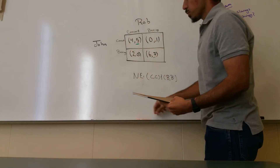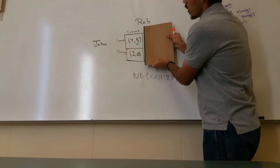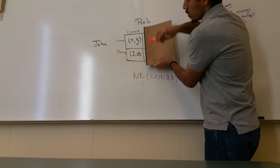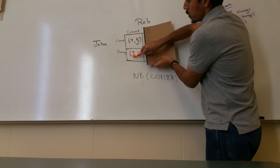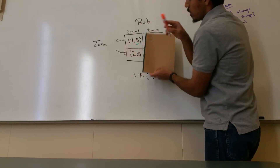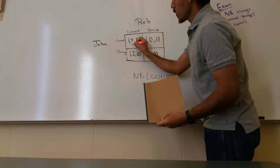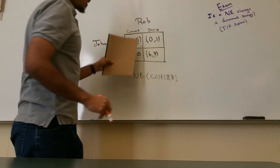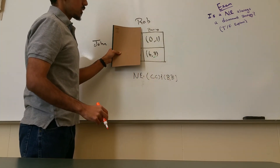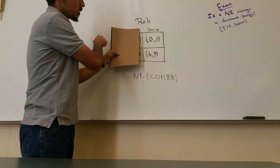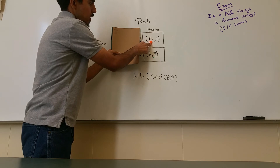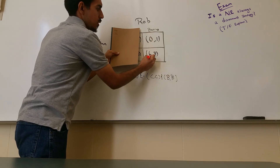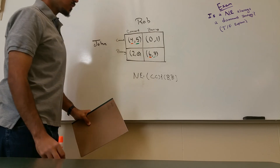We repeat the process and say: Rob is going to the concert — should John go to the concert or to boxing? Well, 4 is bigger than 2, so we're going to underline 4. And lastly, Rob is going to boxing — should John go to the concert or to boxing? Well, 6 is bigger than 0, so we're going to underline 6.